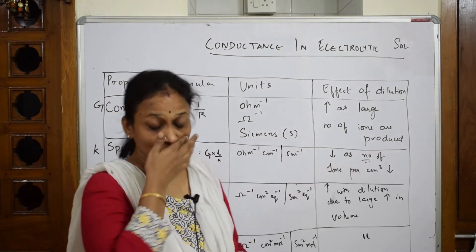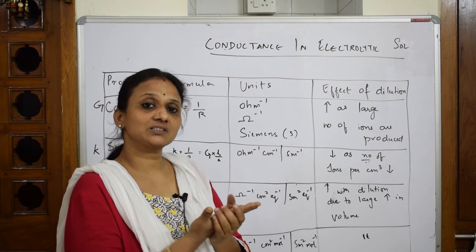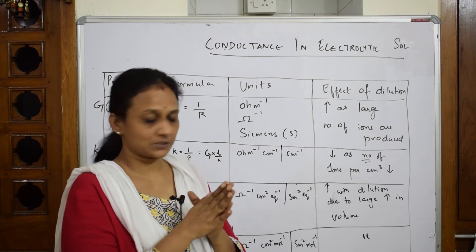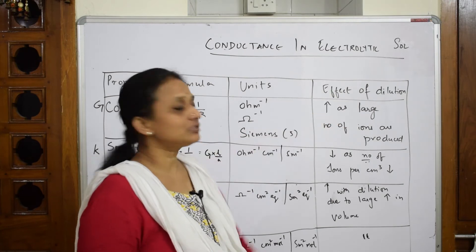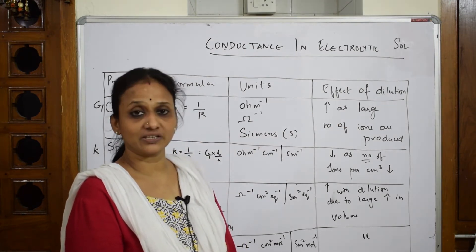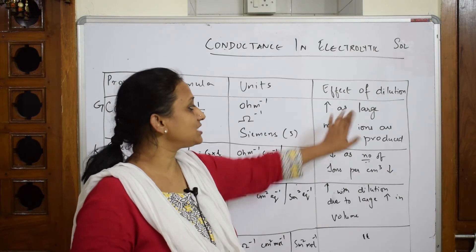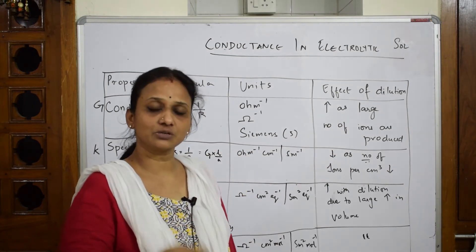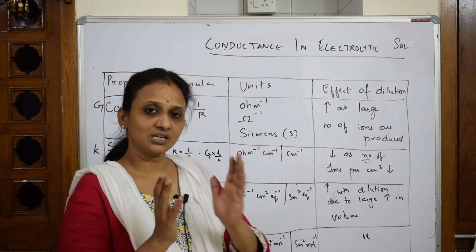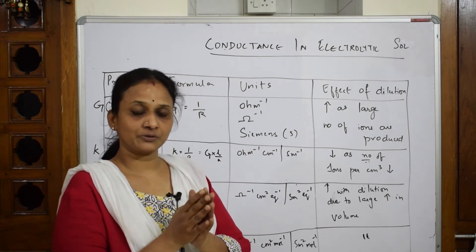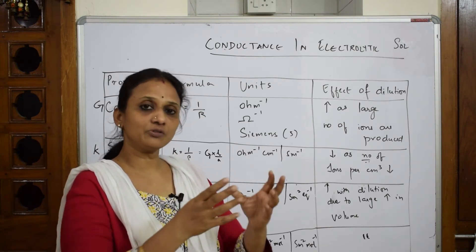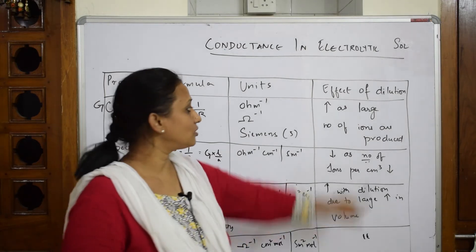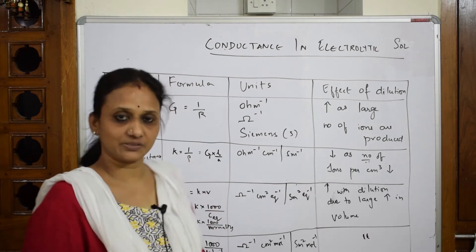Conductance is about the flow of ions or electrons. When we dilute the solution, conductance increases — because as dilution increases, the movement of ions increases, and when the movement of ions is more, conductance automatically increases.